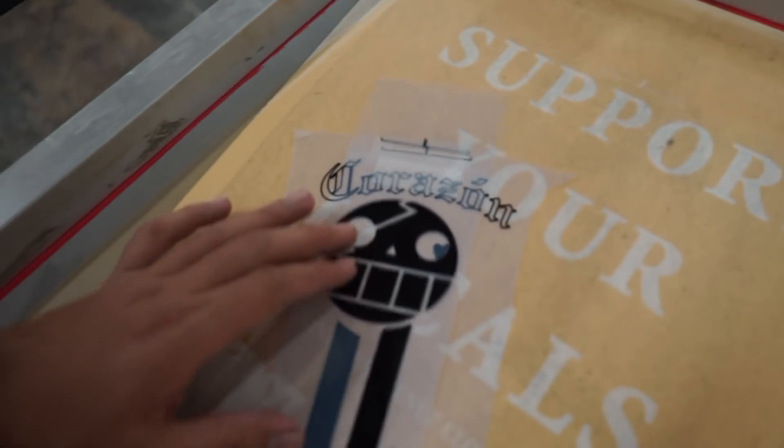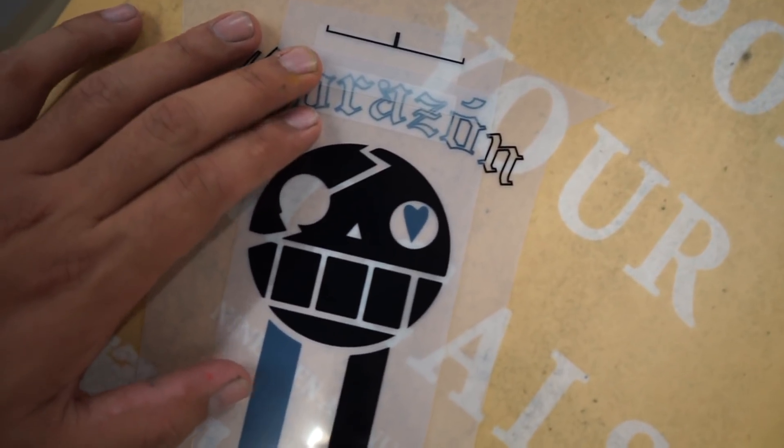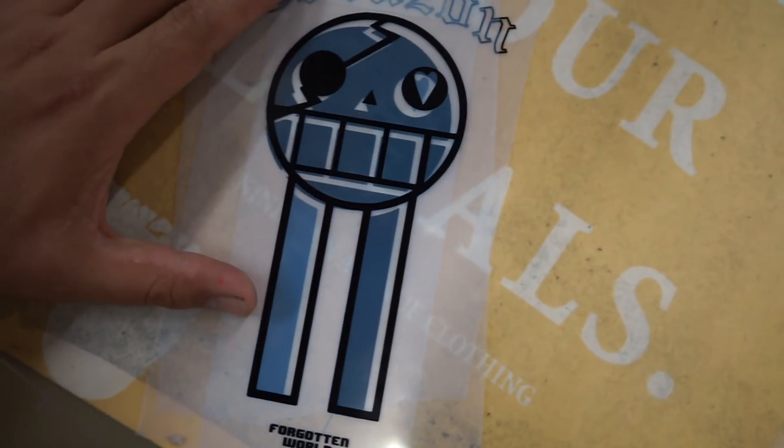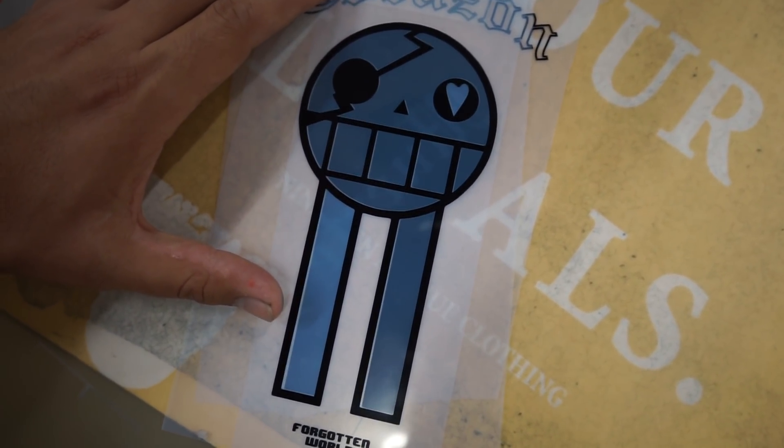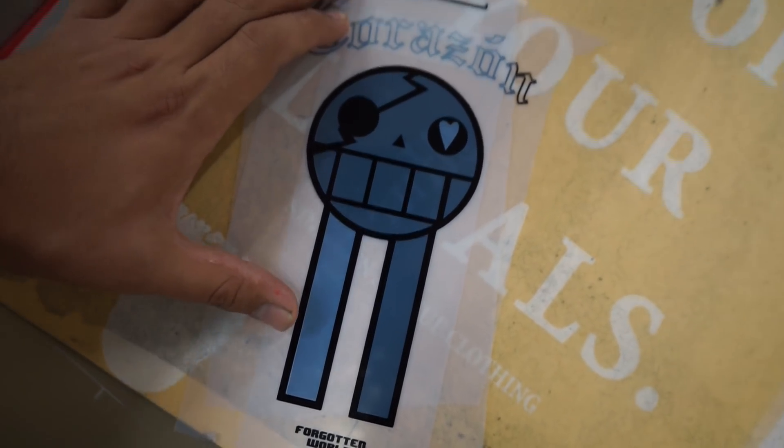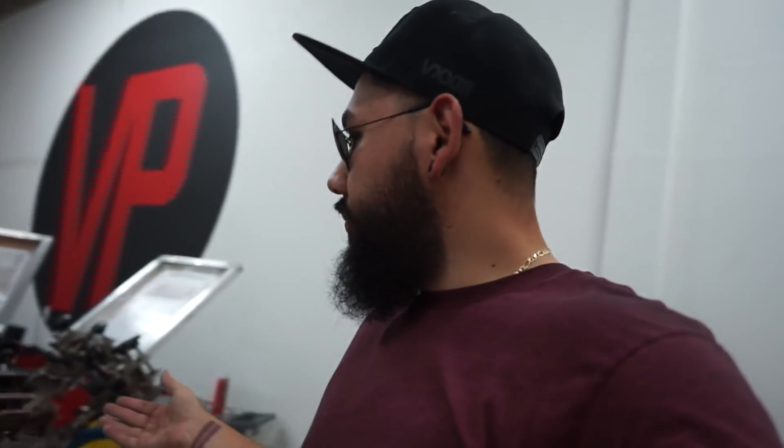I'm going to explain to you guys as I go why it is important to burn them all at the same height. Can you make it work if it's off by a little bit? Sure you can. But if you want to make your life way easier, you want them all to be the same. The registration marks help the design come together. Once you line those up, your design is going to come together.